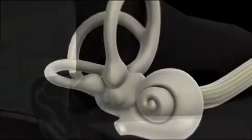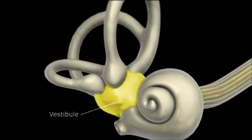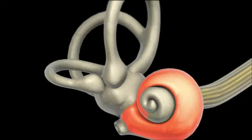The organ of Corti extends from the anterior part of the vestibule and coils for about two-and-a-half turns around a bony pillar, called the modiolus.